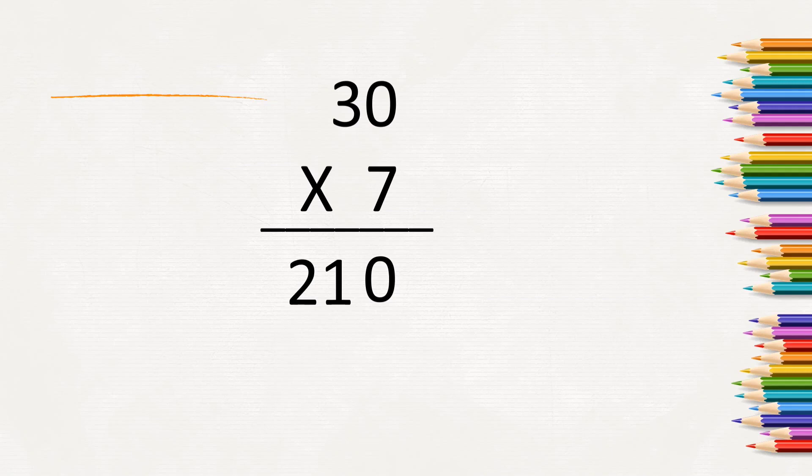Remember, we should always start multiplying by the smallest value that is 1s place. Then we will move to 10s place. First we will multiply with 1s place, then move to 10s place. If there is one more value, then we will move to that value, that is 100s place.